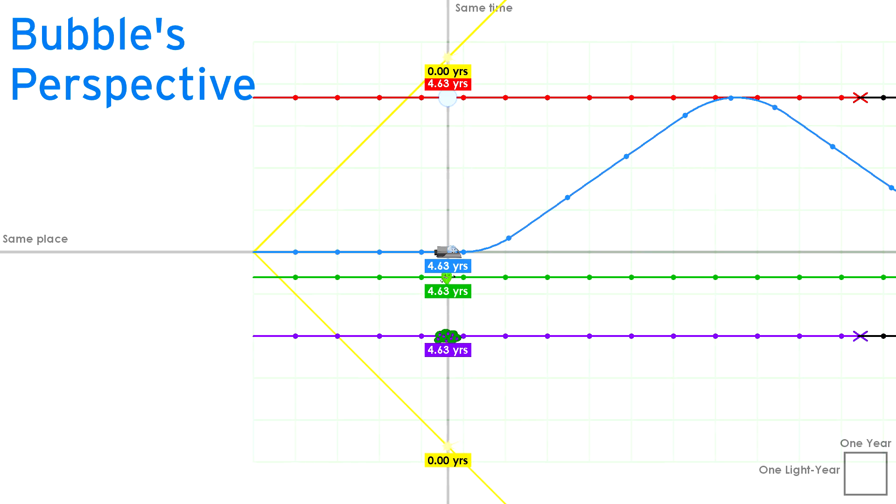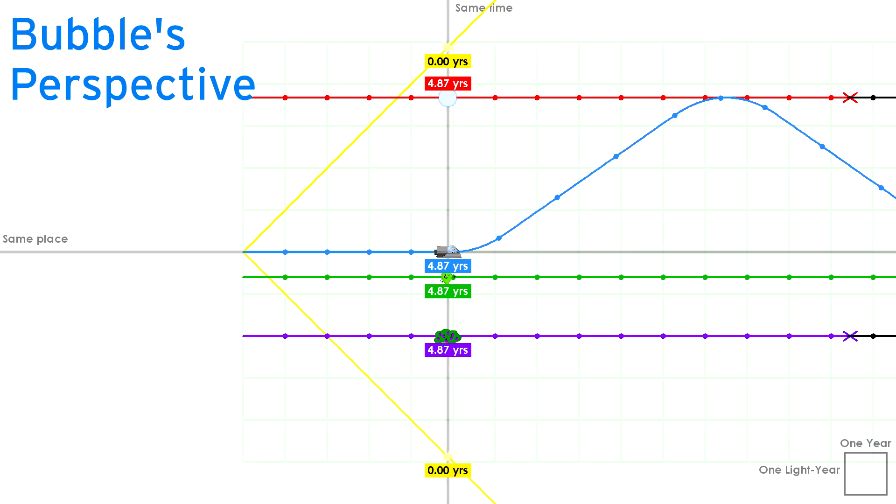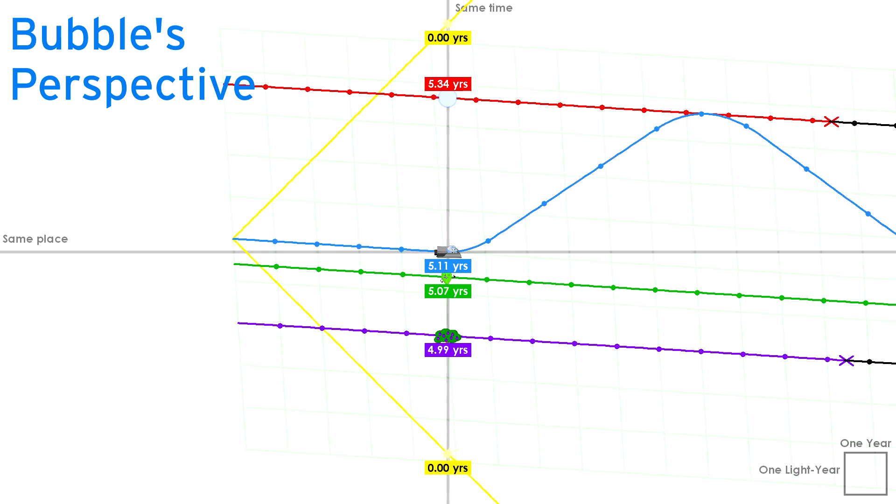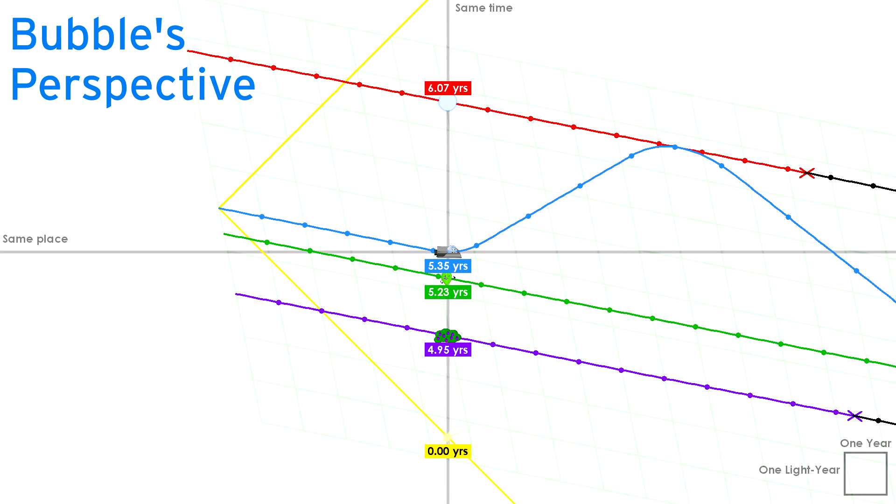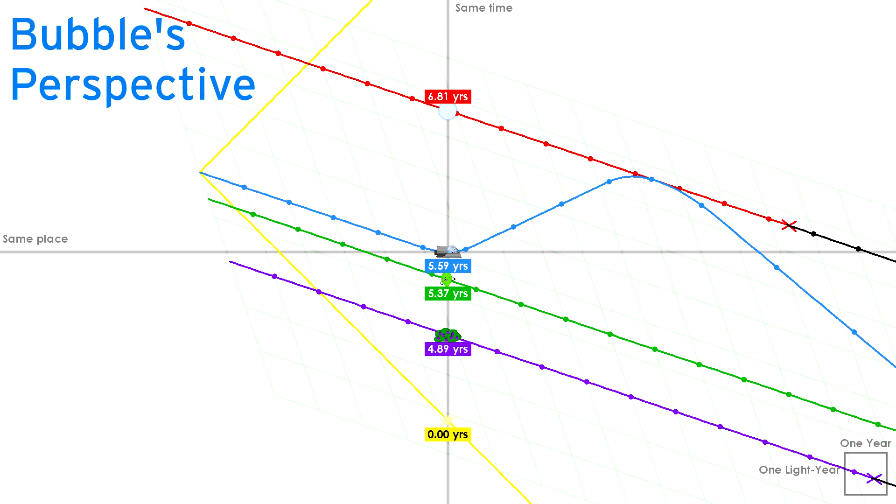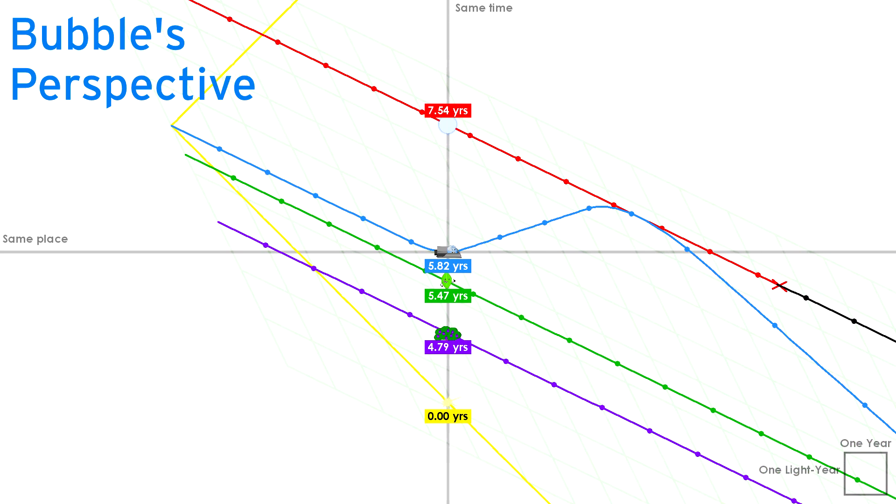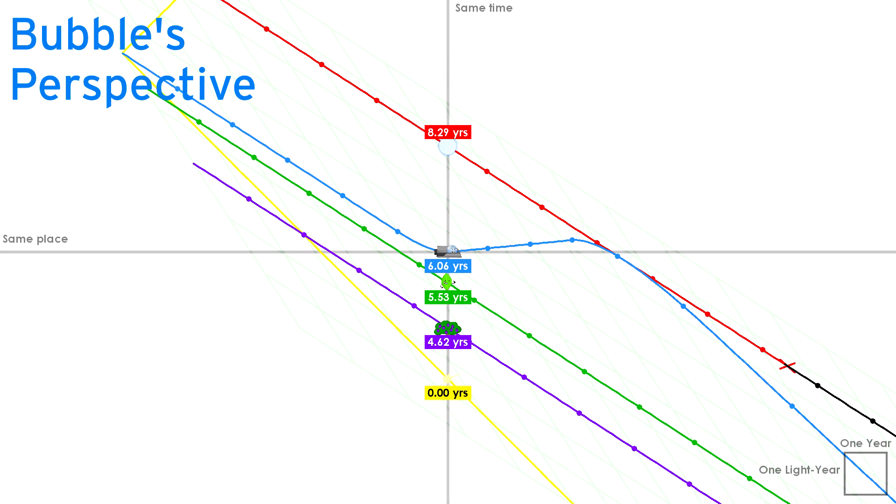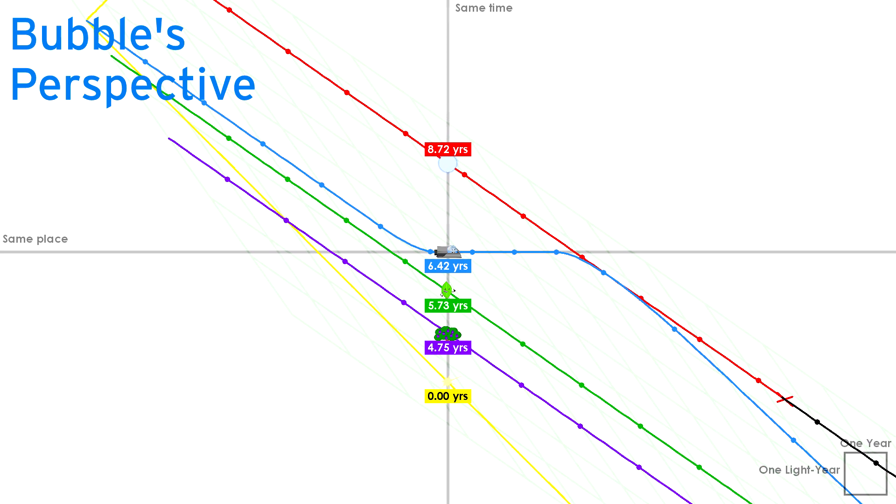Back to the story. Now let's watch Bubble do her 10 year round trip, this time using a Lorentz transformation. As she starts accelerating, notice how the graph is squishing more and more. Remember, this is required to keep Bubble's trajectory horizontal and the light rays perfectly diagonal.